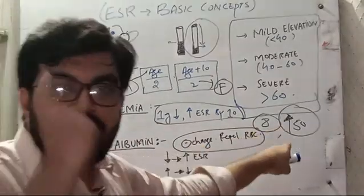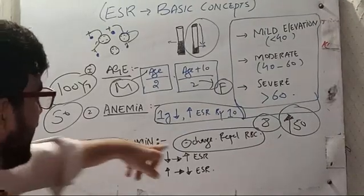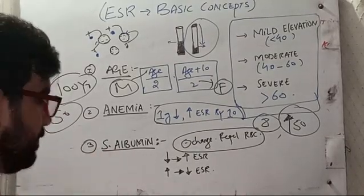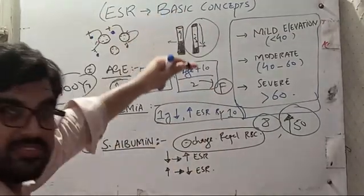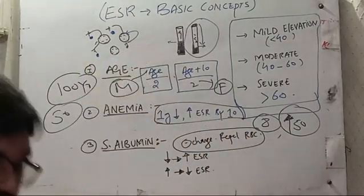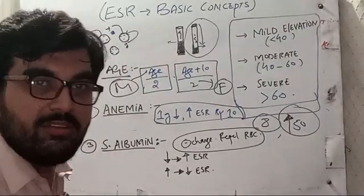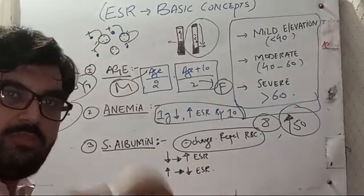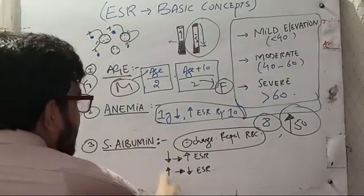Coming toward serum albumin: albumin has negative charge and RBC also has negative charge, so albumin repels RBC. If albumin repels RBC, the RBC settling does not happen. If RBC cannot settle down, the ESR will be low. So increase in albumin causes decrease in ESR.